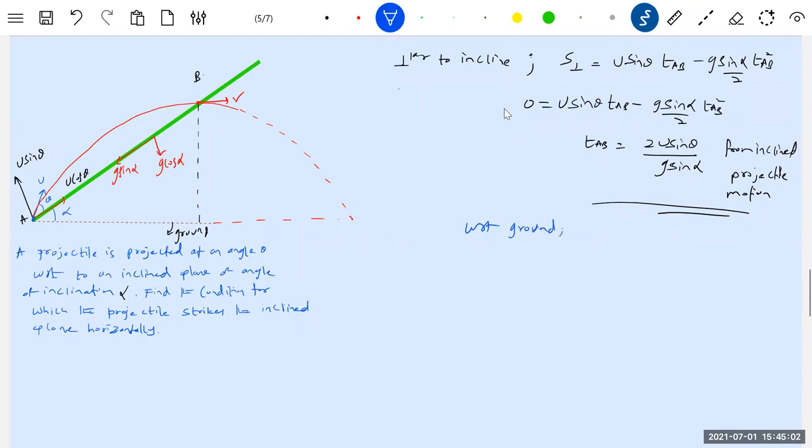So point B will become the highest point for the object projectile. Point B is the highest point of object projectile motion. I think you know this idea.